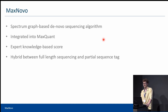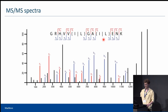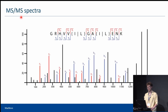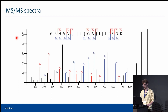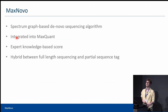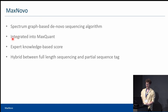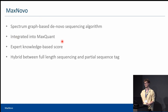MaxNova is a spectrum graph-based de novo sequencing algorithm, meaning that it represents the MSMS spectrum in the form of a graph, and this way it retrieves sequences from it. It is integrated into MaxQuant and uses a set of scores to select the best possible sequence.